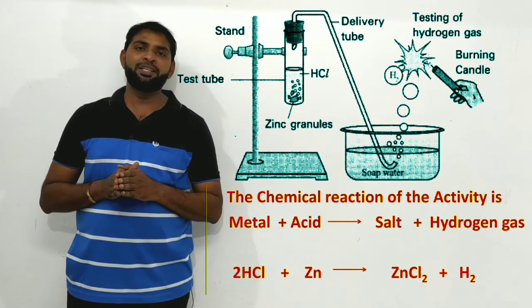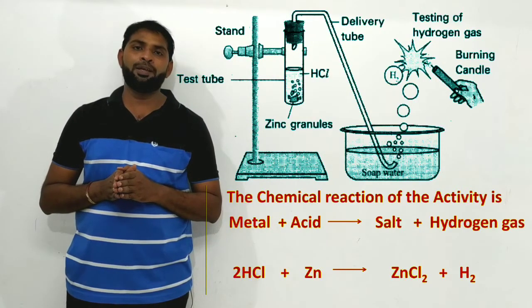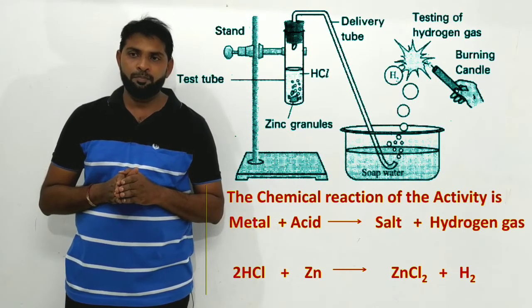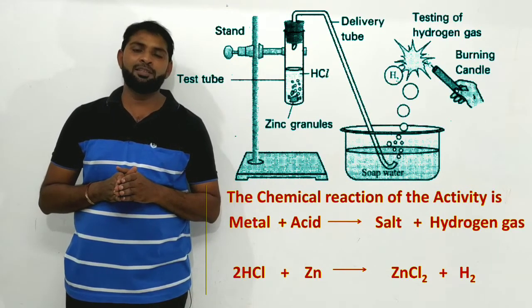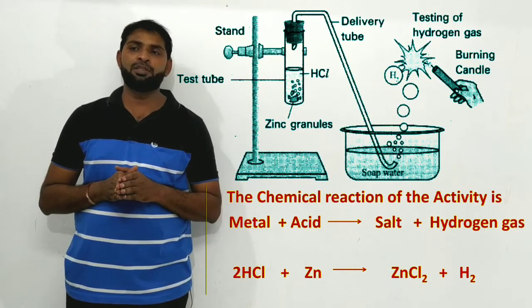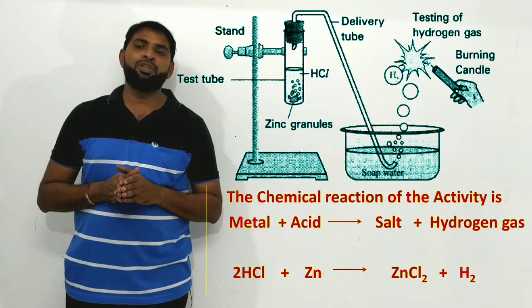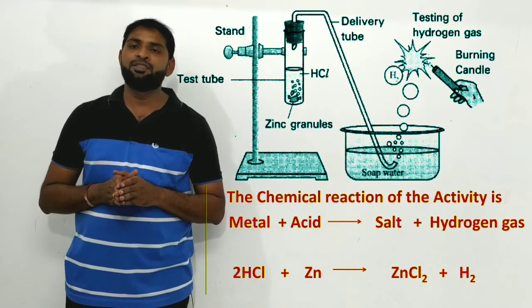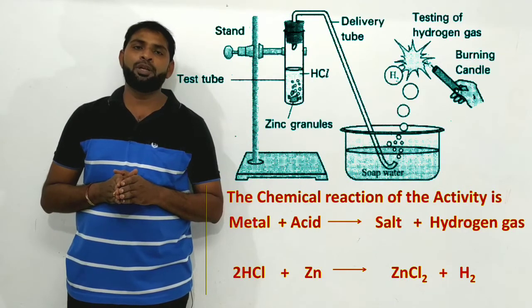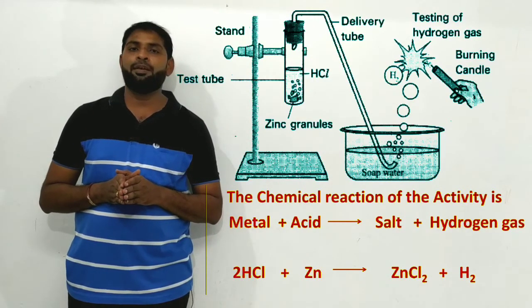The general chemical reaction is: Metal + Acid → Salt + Hydrogen gas. For this activity, the equation is: 2HCl + Zn → ZnCl₂ + H₂.